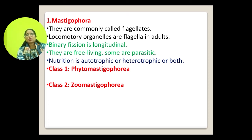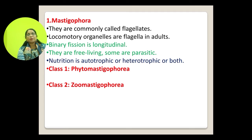Mastigophora are also known as flagellates. Their locomotory organelles are flagella in the adult stage, binary fission is longitudinal, and they may be free-living or parasitic. Nutrition is autotrophic, heterotrophic, or both. Mastigophora is divisible into two classes: Phytomastigophora and Zoomastigophora.